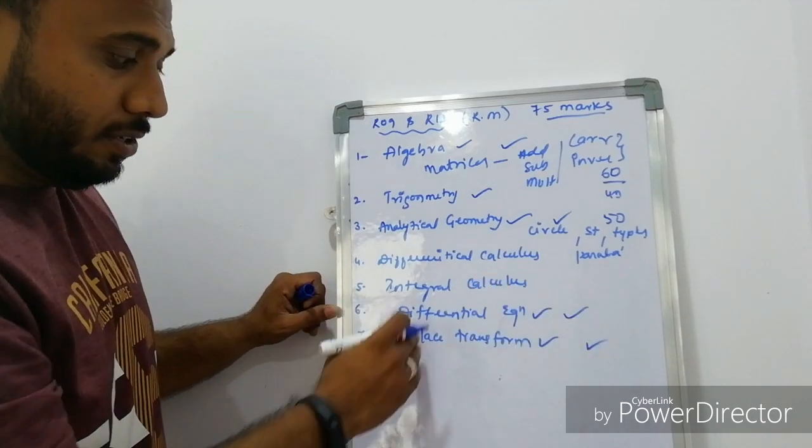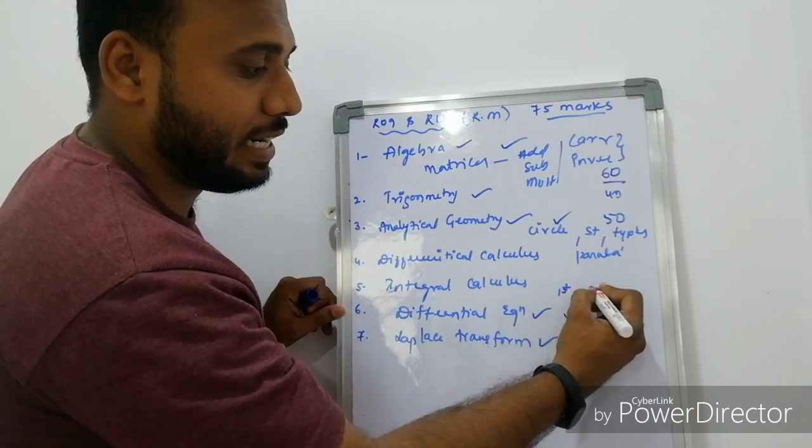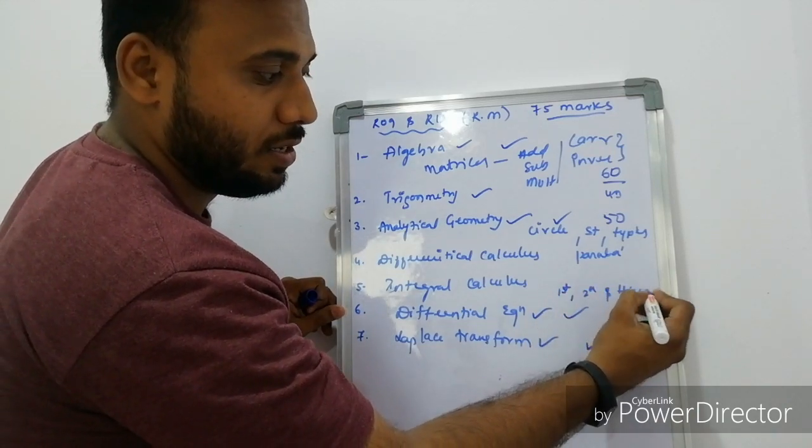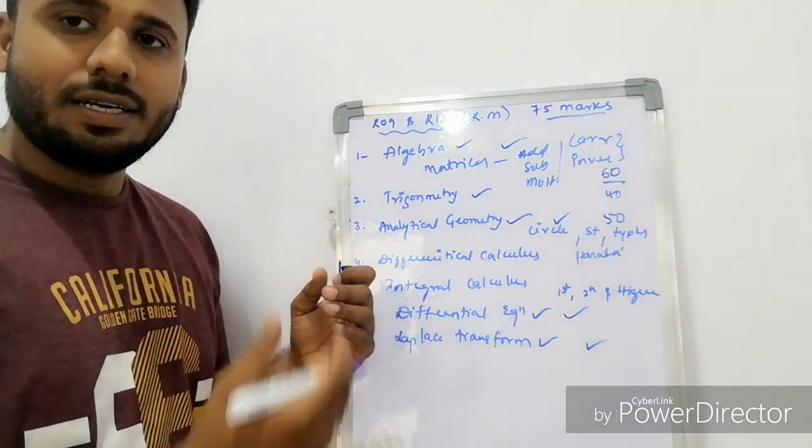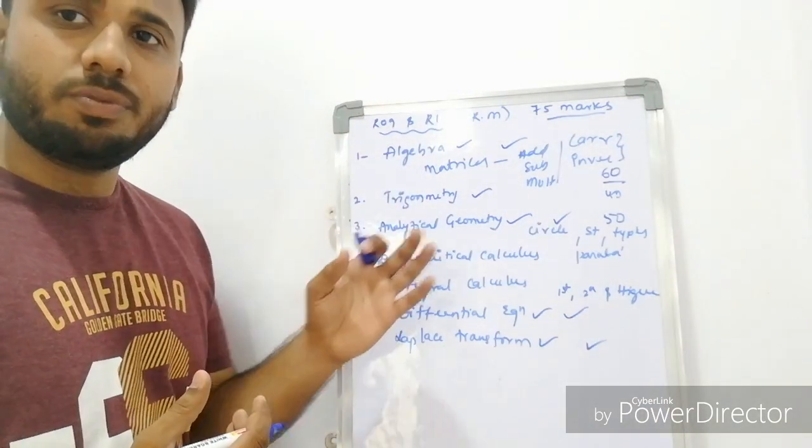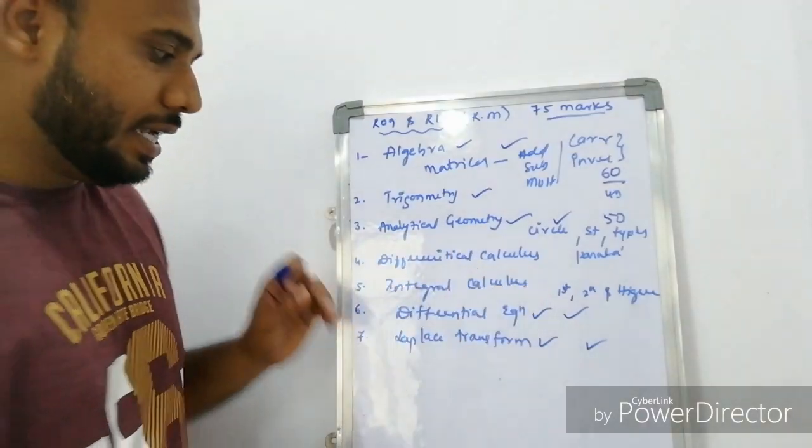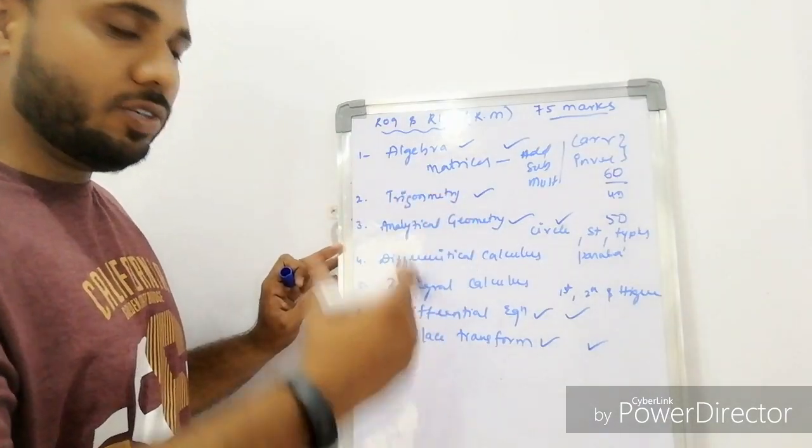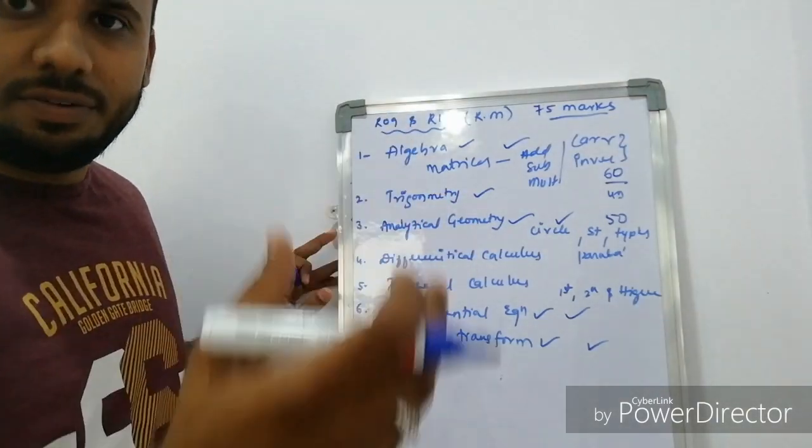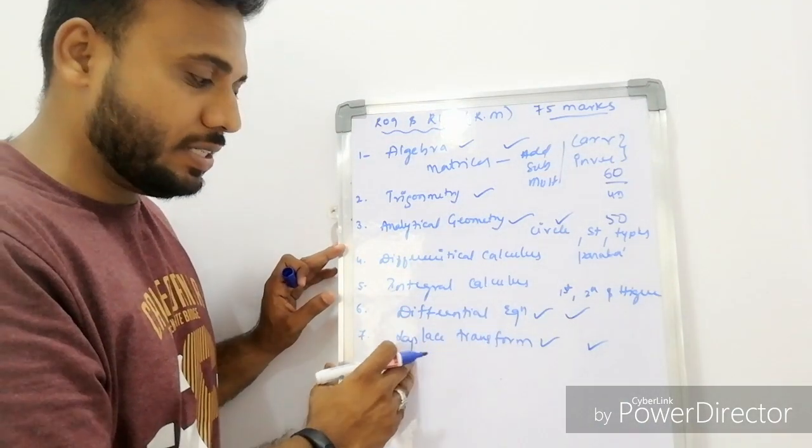Coming to differential equation, there are few topics like first order, second order and higher order differential equation. There are few steps like e power ax, sin x, cos x. These are few methods that you have to follow in the differential equation. In Laplace transform, there are just 2 or 3 forms. You have minimum 6 to 10 formulas. You have to memorize such kind of formulas to score good marks in Laplace transform.